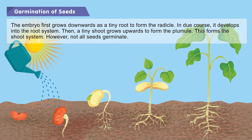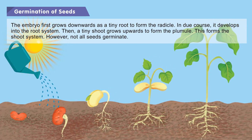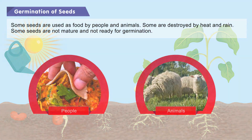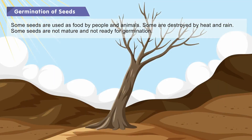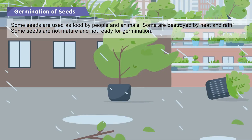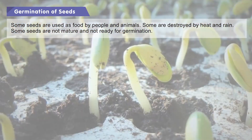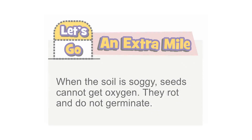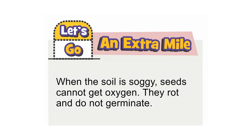However, not all seeds germinate. Some seeds are used as food by people and animals. Some are destroyed by heat and rain. Some seeds are not mature and not ready for germination. When the soil is soggy, seeds cannot get oxygen — they rot and do not germinate.